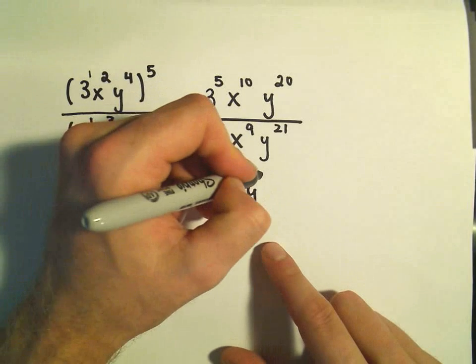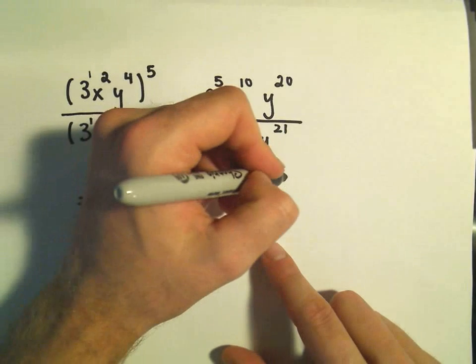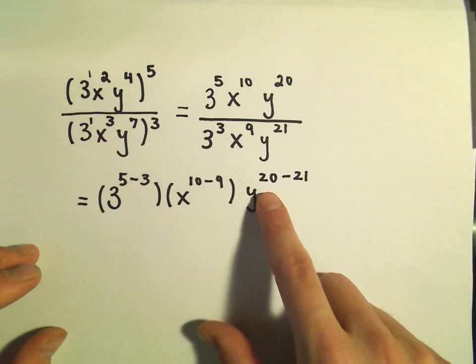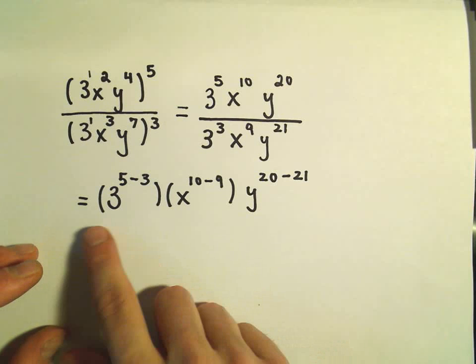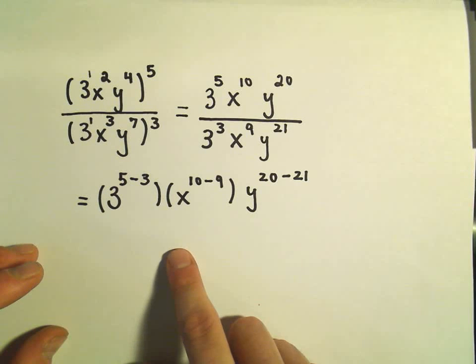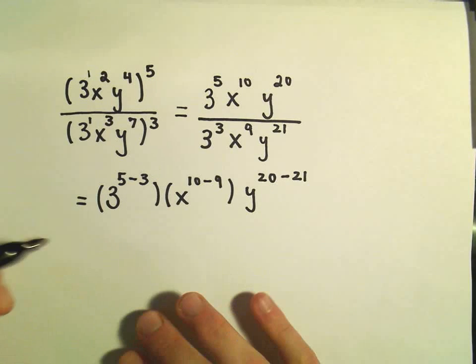And then we would have y. If I leave the top exponent, and then I subtract away the bottom exponent, we'd have 20 minus 21. And you can think about all this as being over 1. We've basically moved everything to the numerator.